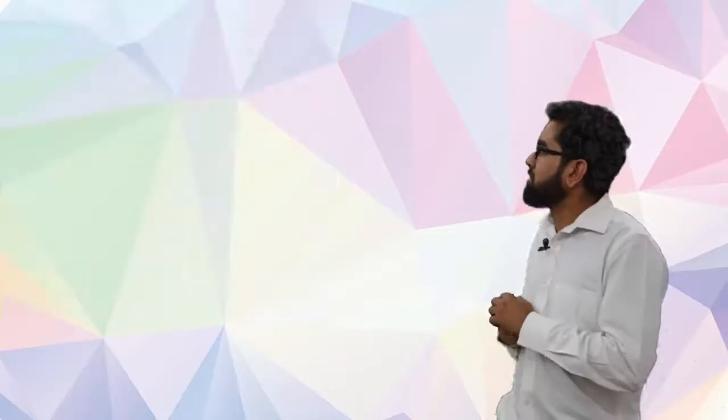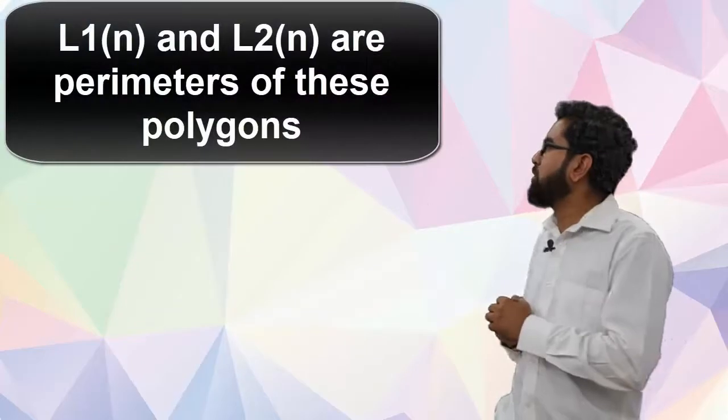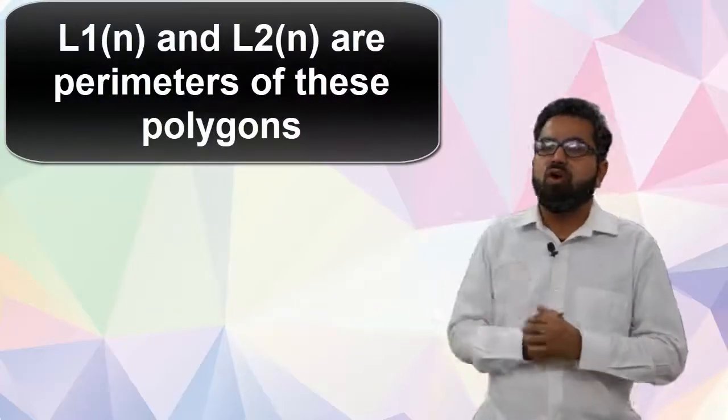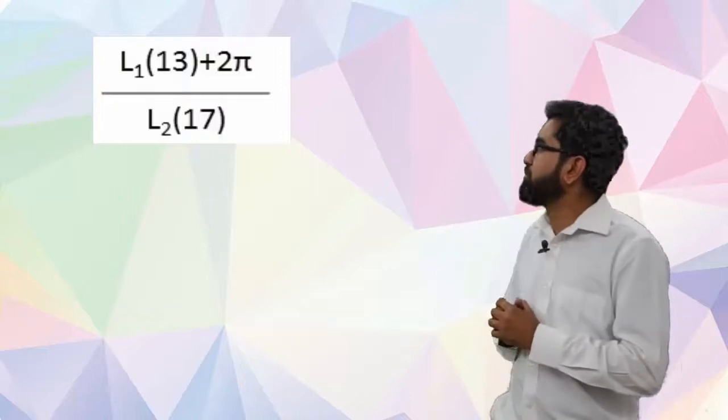Now we are also given that L1(n) and L2(n) are the perimeters of these families of polygons. The question we are asked is what is the value of L1(13) plus 2π divided by L2(17).